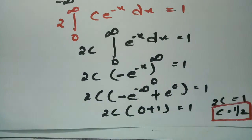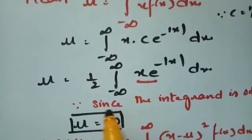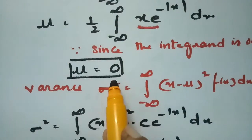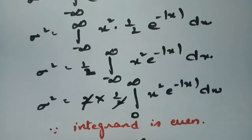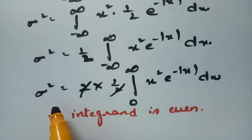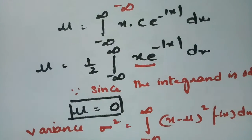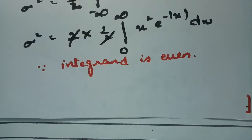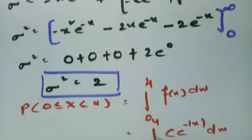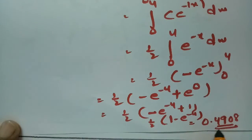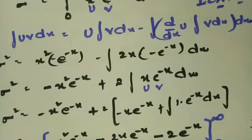To summarize: we showed c = 1/2, the mean equals 0 because the integrand is an odd function, the variance equals 2 because the integrand is an even function (solved using integration by parts), and the probability when the variate lies between 0 and 4 is 0.4908. Thank you for watching — many more problems will be uploaded, so please practice for best results.